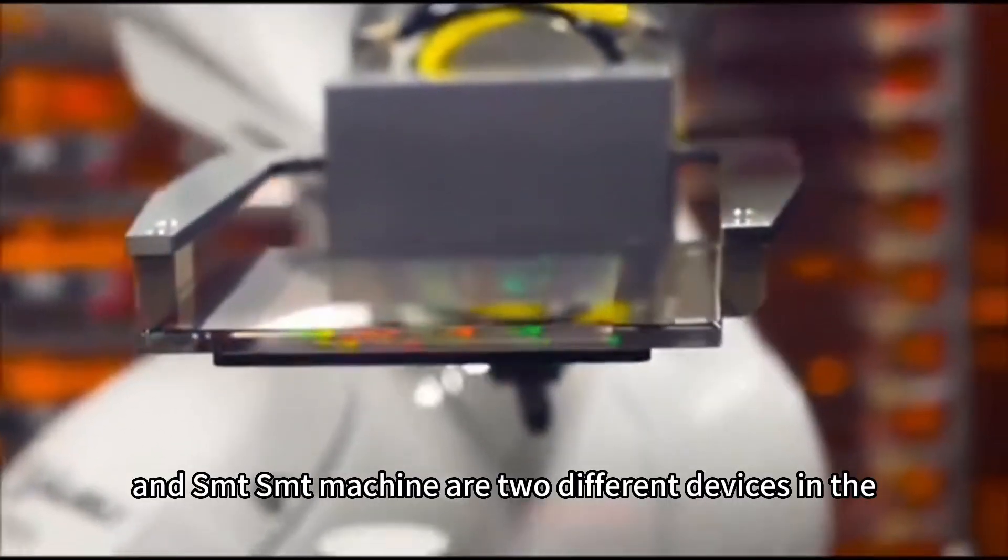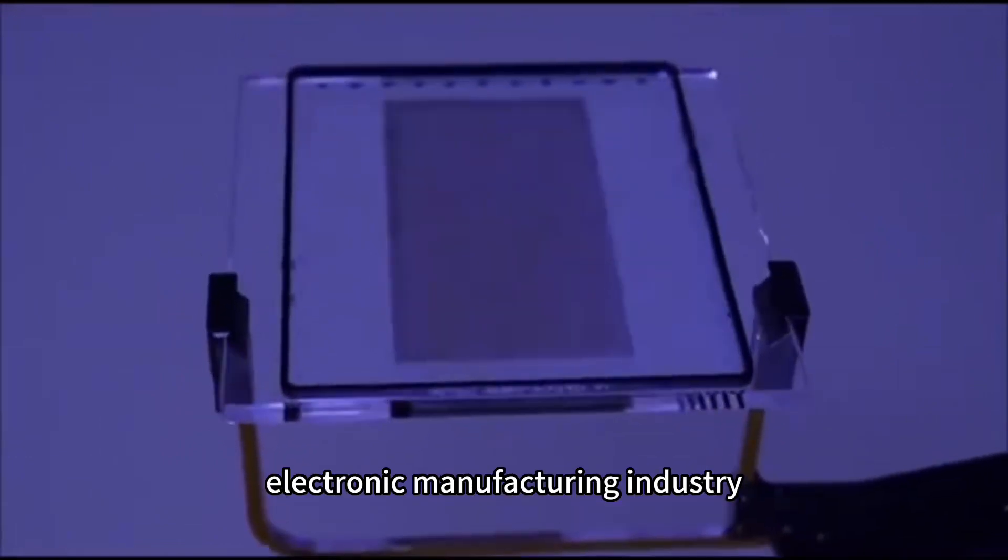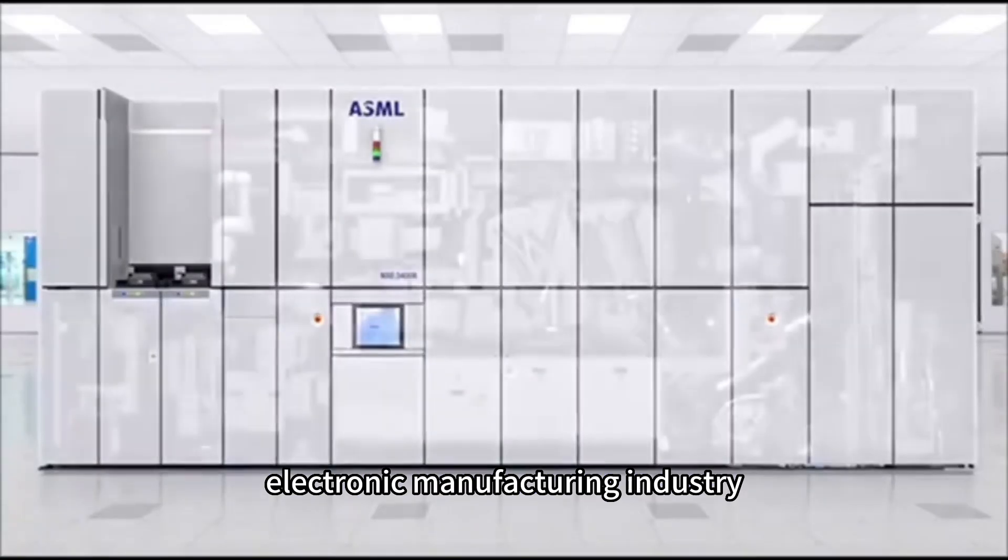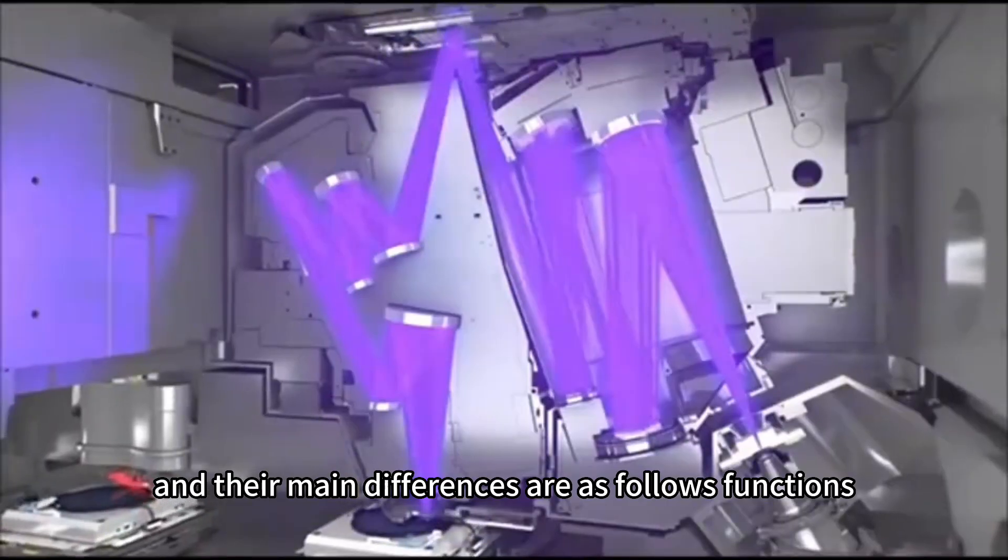Photolithographic machine and SMT machine are two different devices in the electronic manufacturing industry. And their main differences are as follows.